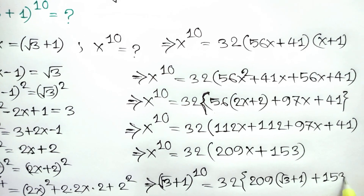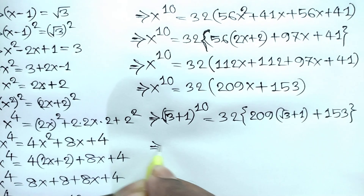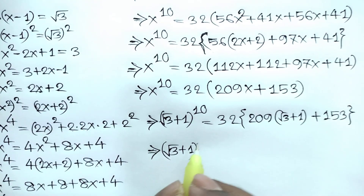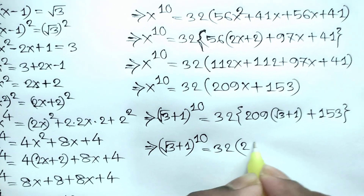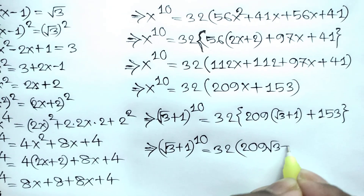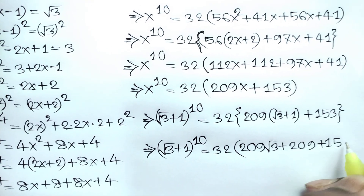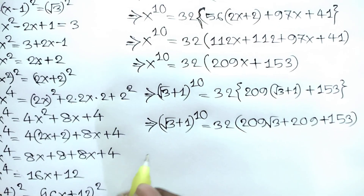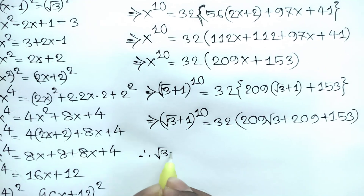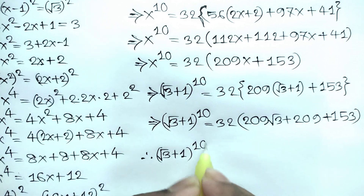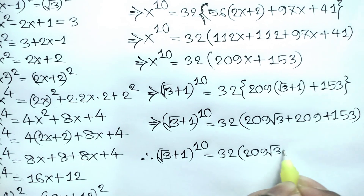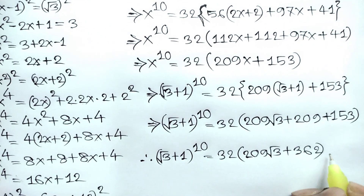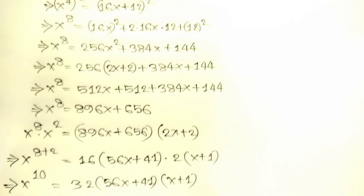Substituting x equals square root of 3 plus 1, we get: square root of 3 plus 1, to the power 10, equals 32 times 209 times square root of 3, plus 209, plus 153. Therefore, square root of 3 plus 1 to the power 10 equals 32 times 209 square root of 3 plus 362. That is our final answer. Thanks for watching — if you like this video please subscribe to my channel. Bye bye!